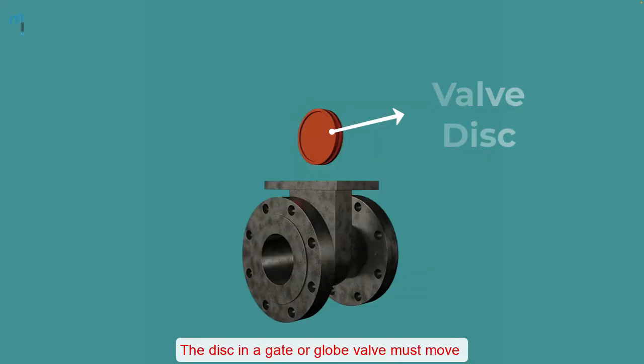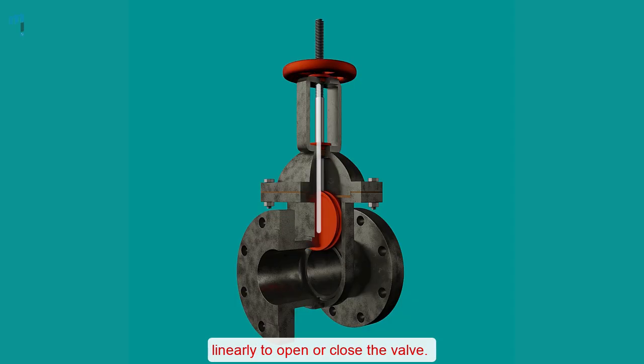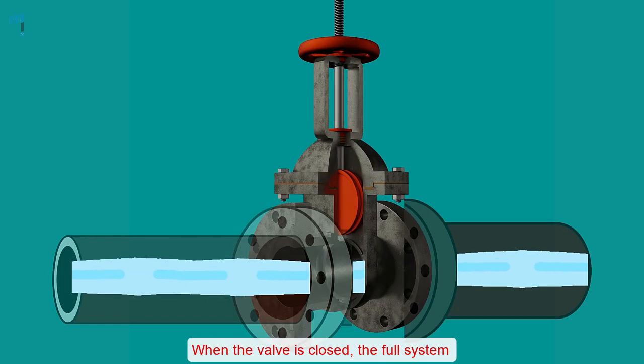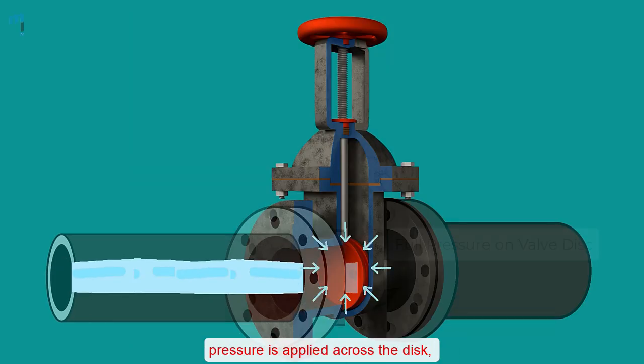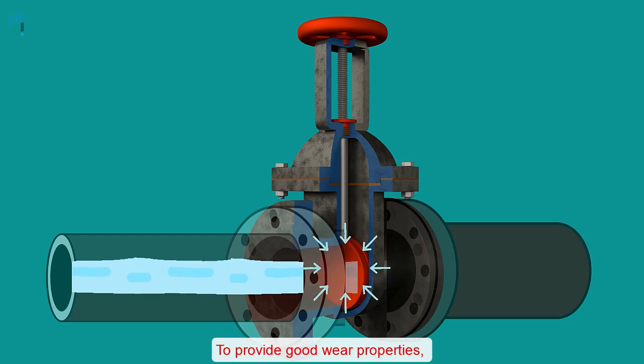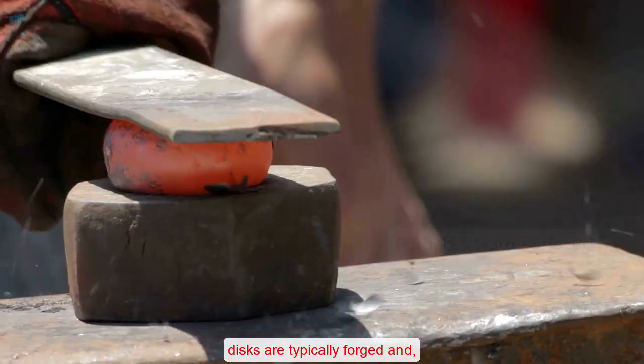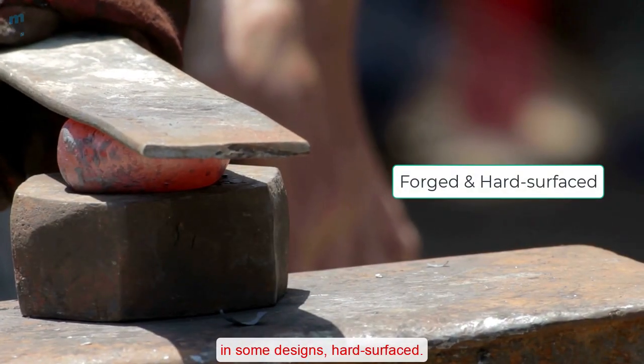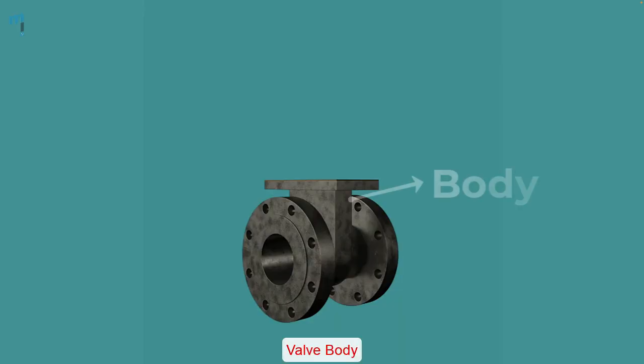The disc in a gate or globe valve must move linearly to open or close the valve. When the valve is closed, the full system pressure is applied across the disc. And as a result, the disc is a pressure related component. To provide good wear properties, discs are typically forged and in some designs hard surfaced.